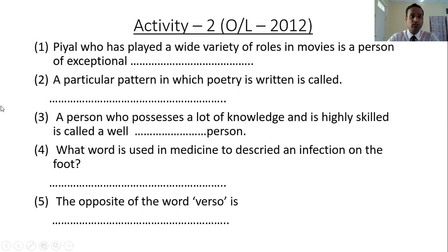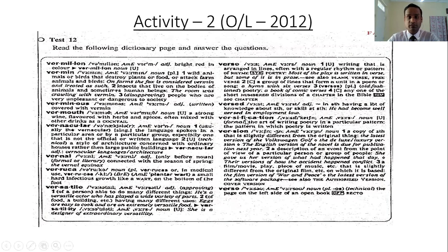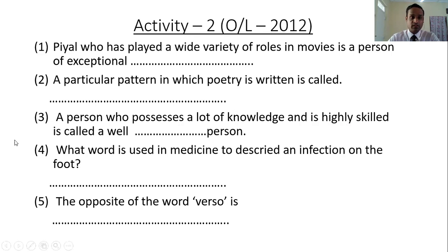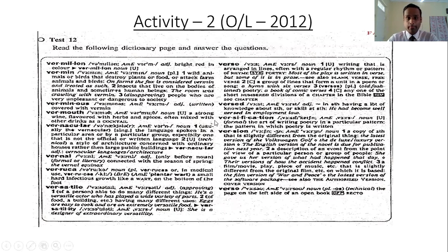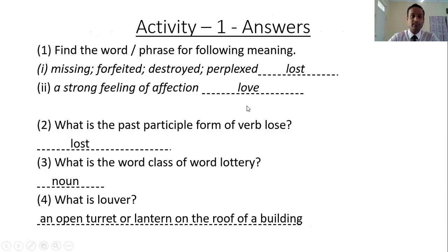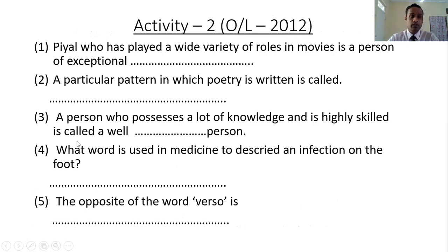Question two: 'A particular pattern in which poetry is written is called blank.' The answer is 'versification' — the art of writing poetry. Question three: 'A person who possesses a lot of knowledge and is highly skilled is called a well-blank person.' The word is 'versed' — having a lot of knowledge about something or skill at something. So the answer is 'versed': a well-versed person.